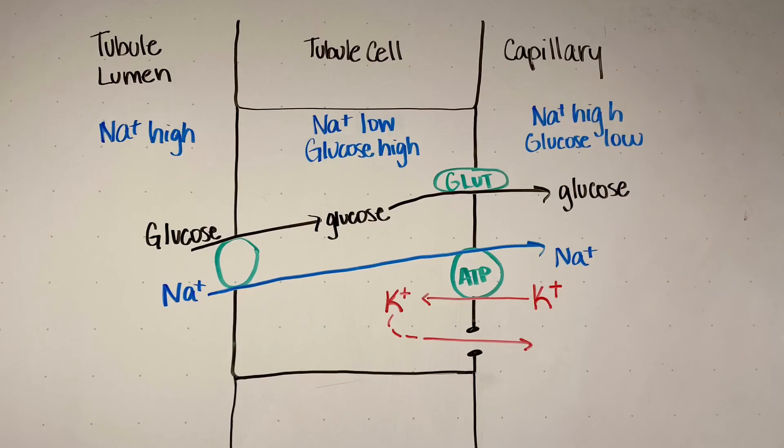Now let's talk about something called a sodium-glucose symporter. Things like glucose, amino acids, and other ions can actually piggyback on sodium in order to get carried to the plasma. Glucose uses sodium flowing down its concentration gradient to get into the tubular cell. Then once glucose is in the cell, it can passively flow into the capillaries through a GLUT protein-mediated transporter, since the concentration of glucose is higher in the cell than in the plasma. Sodium will again use the sodium-potassium ATPase to get out of the cell, and potassium will flow back out to the plasma through a leak channel.